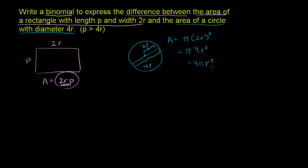What's the difference? Well, it's going to be this thing minus that thing. So it's 2rp minus 4 pi r squared. And we're done.